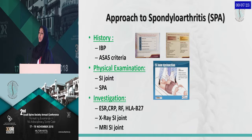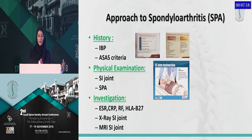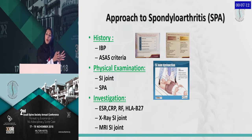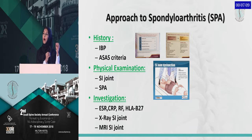Finally, we have the investigations, which are the inflammatory markers, the HLA-B27 that we mentioned previously, and the X-ray. But remember, even if the X-ray is normal, you're still going to proceed with the MRI of the SI joint in order to justify starting the new biologic medication.